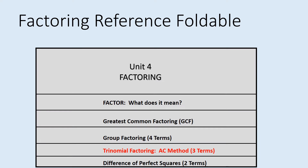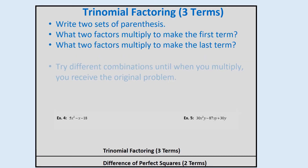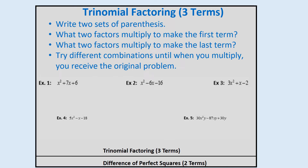So this is what our foldable looks like, and today we're going to be talking about the one that is in red. We're going to be talking about trinomial factoring, which you may have learned as the AC method, when we have just strictly three terms. So if you open up your foldable to that first flap, we have to write down a couple of bullet points. These are going to be our guiding steps to solve these problems.